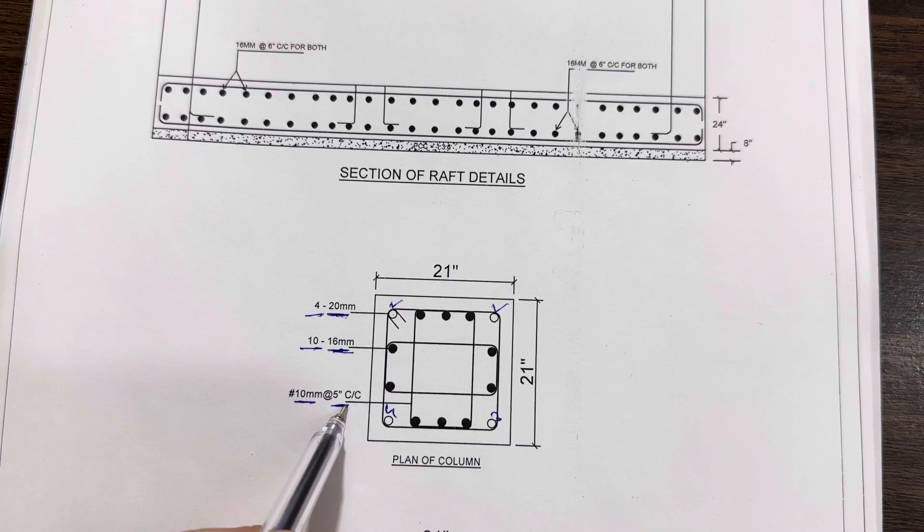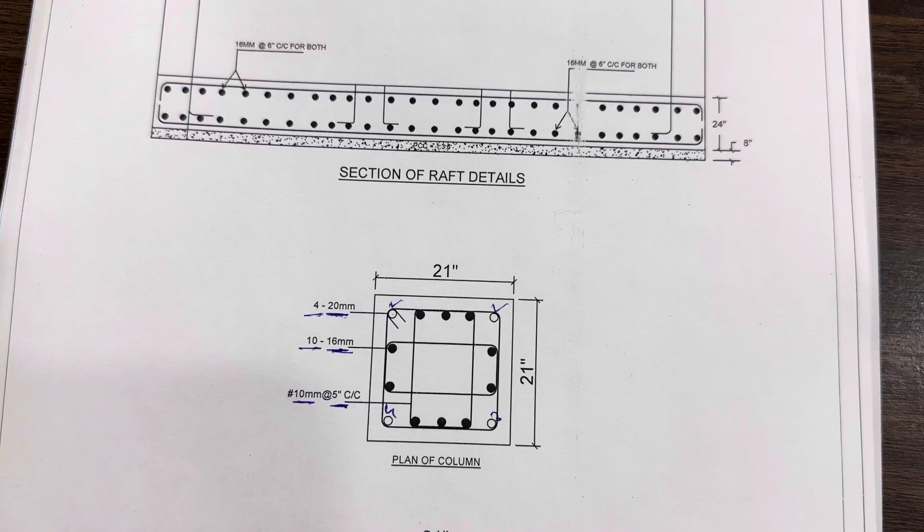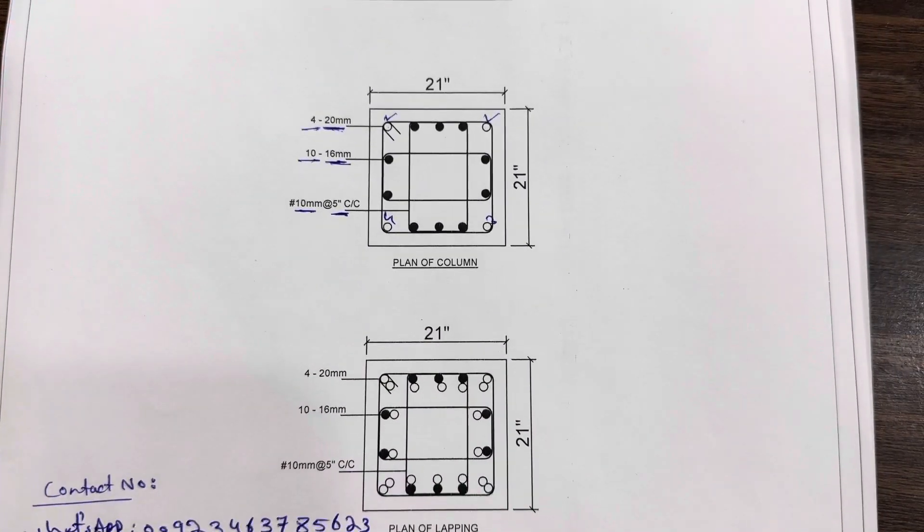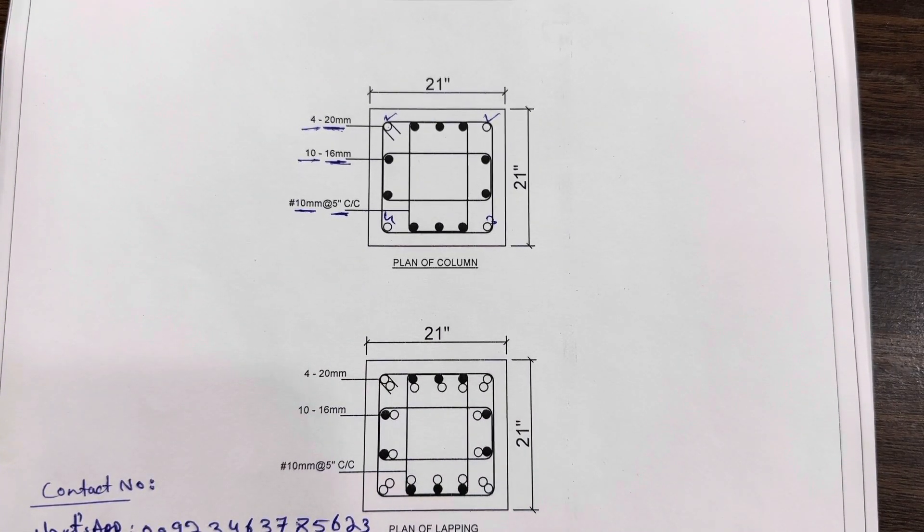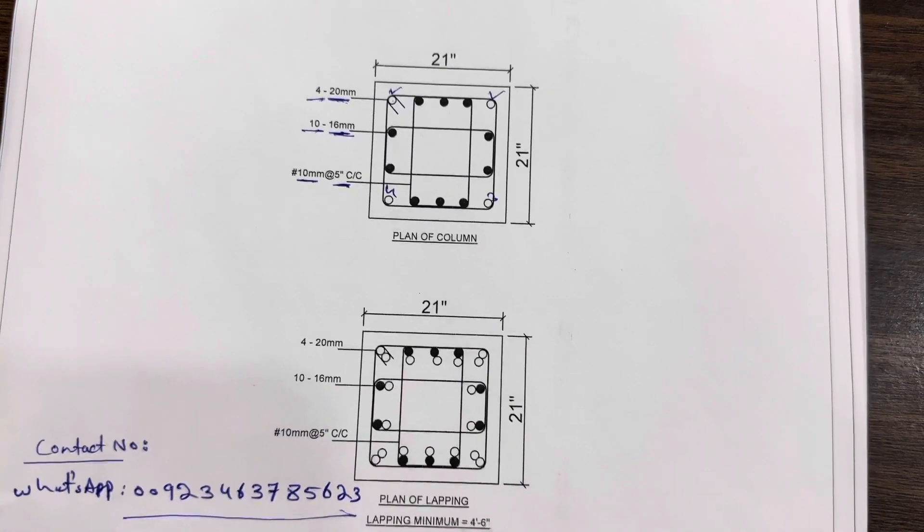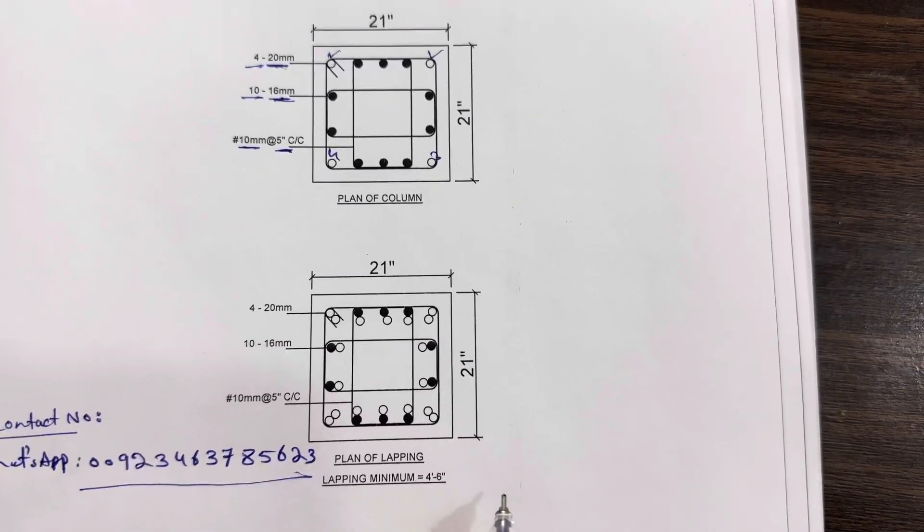This is plan of the column. Now let me guide you for plane of lapping. Lapping minimum four feet and six inches, or you can use 50 to 60 d.